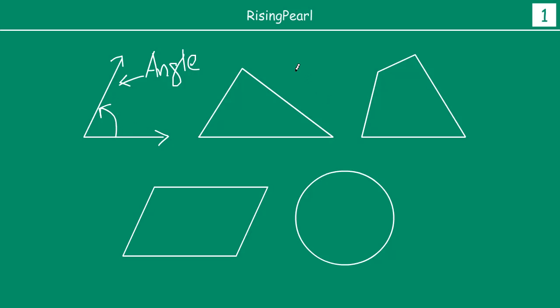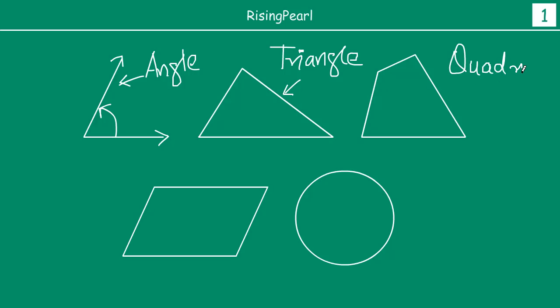Then, Dostho, in Series 7 we talked about triangles. This is an example of a triangle. In Series 8, we moved on to talk about quadrilaterals. We have seen, Dostho, quadrilaterals — what are different kinds of quadrilaterals and what are their special properties?